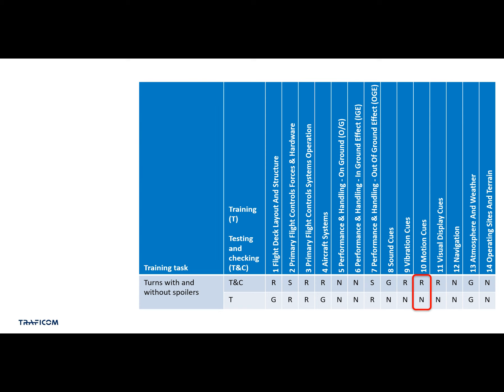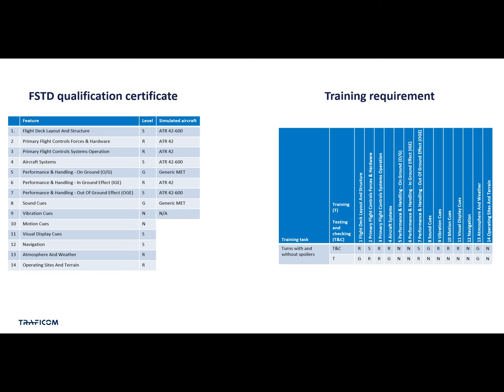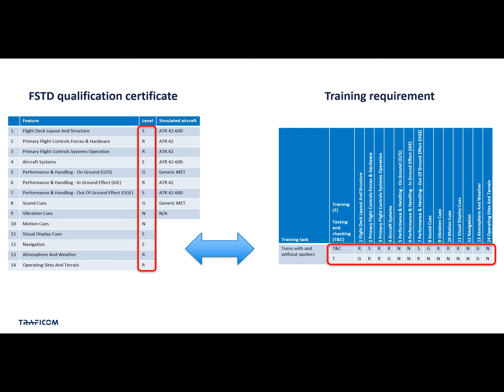Now let's see the training table and the FSTD qualification certificate side by side. Comparison is simple — we can quickly check if the simulated aircraft is appropriate for the training, and compare the FSTD's capabilities to the training requirement. If the FSTD matches or exceeds the required level for each feature, it fulfills the training or testing and checking requirement.